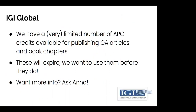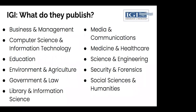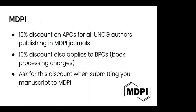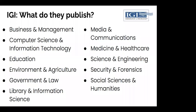IGI Global is our next publisher — we have a limited number of credits for APCs for publishing open access articles and book chapters with them. If you're considering publishing an OA article or book chapter in an edited book, let us know, because these credits expire and we want to use them. If you or your students or colleagues have an IGI publication coming up, get in touch. This deal is based on how much we spend with them — if we buy more content from IGI, we get more credits. They publish in areas including business, education, and libraries.